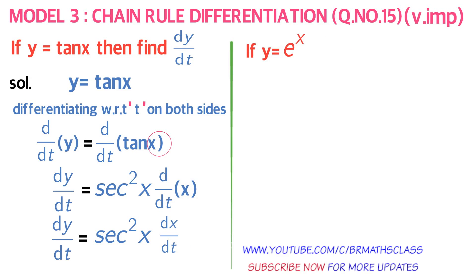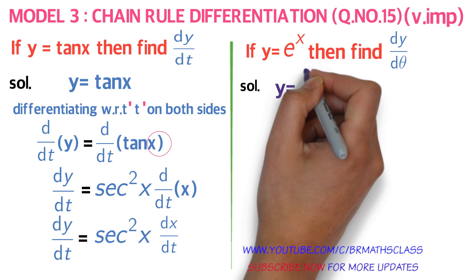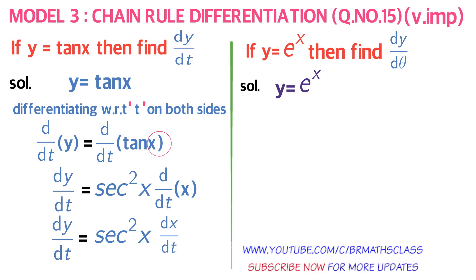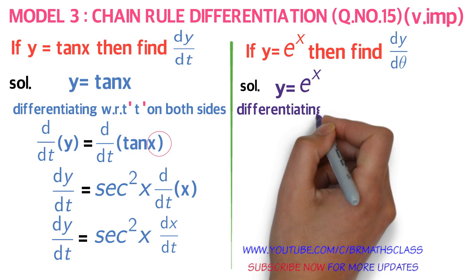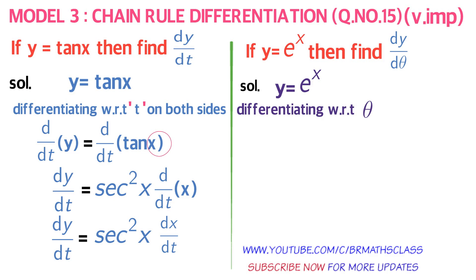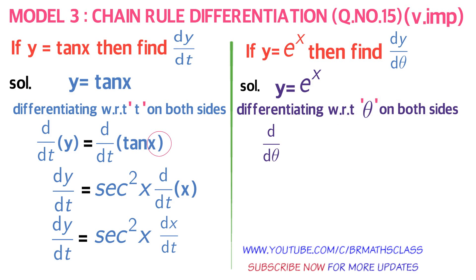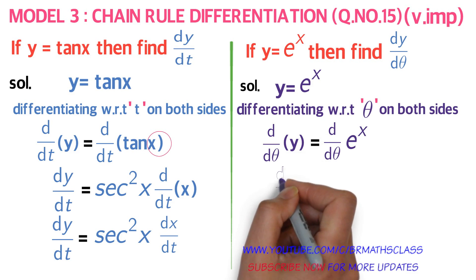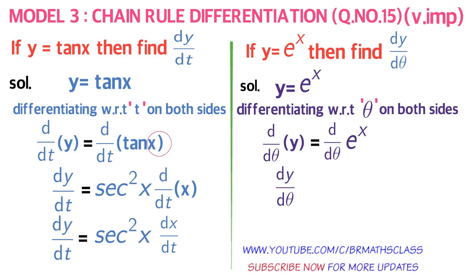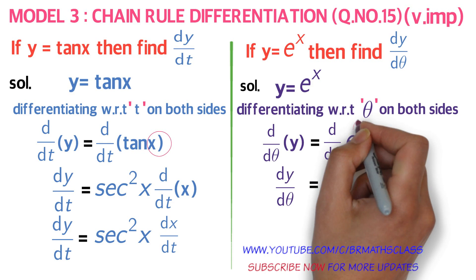Next example: if y = e^x, find dy/dθ — the derivative of y with respect to theta. We take the given function y = e^x and differentiate both sides with respect to theta. So d/dθ of y equals d/dθ of e^x. The left-hand side is dy/dθ.